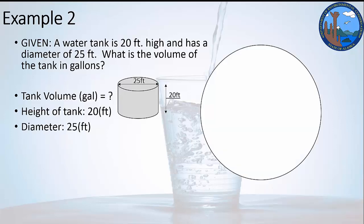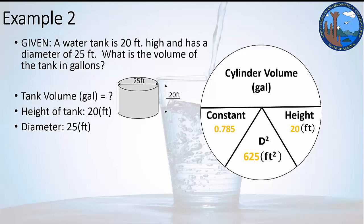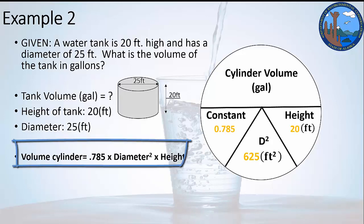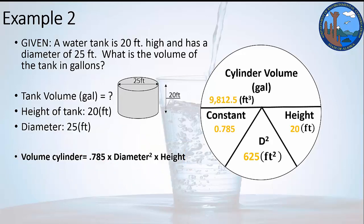So I'm going to throw my Davidson pie wheel up there, section out the bottom half for three different areas of variables. We've got a constant, diameter squared, and height. Fill in those numbers because we have them. I know that I've got to multiply them all together, so that's what I do to get the answer. If I wanted to do the formula, this is the formula that I would have to work with. In this situation, I just multiply these three together to get the volume. You get 9,812.5 feet cubed, either way you do it.